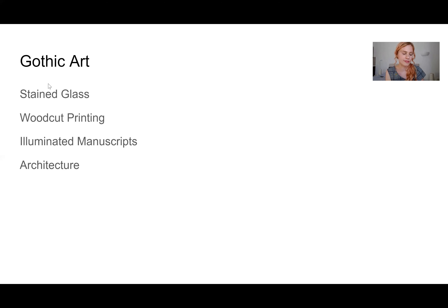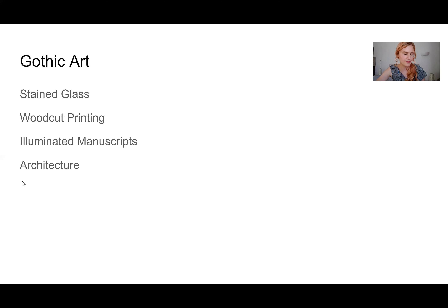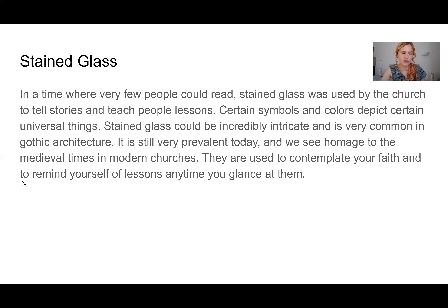Now we're going on to Gothic art, which we briefly mentioned when describing romanticism. It was a hugely important movement because art and reading began to spread to the middle class during this period, whereas previously they were only enjoyed by the upper classes. Stained glass is really important because it was used by the church to tell stories at a time when very few people could read. It was symbolic and crucial in communicating. It is still very prevalent today because although language has changed, the pictures can be interpreted by anyone forever.